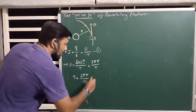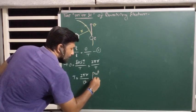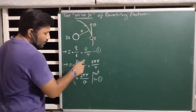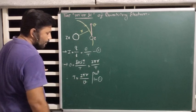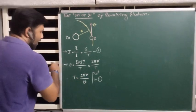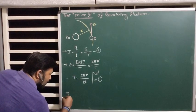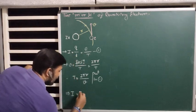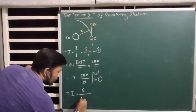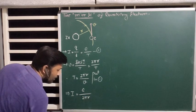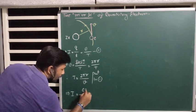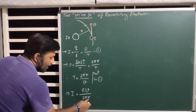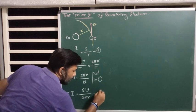Put the value of T into equation number 1. So instead of T, place 2πr/V. We get the equation for current: I = eV / 2πr. This is equation number 2.